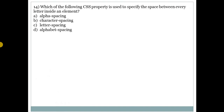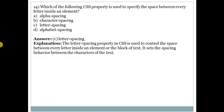Question number 14: which CSS property is used to specify the space between every letter inside an element? Answer is C — letter-spacing. In CSS, the letter-spacing property is used to control the space between every letter inside an element or a block of text.